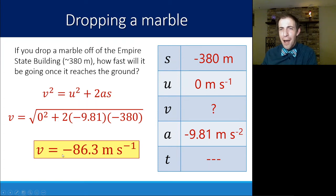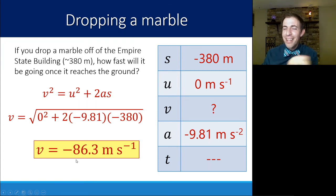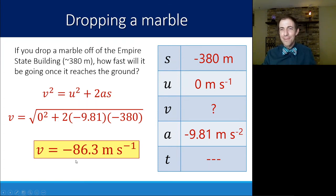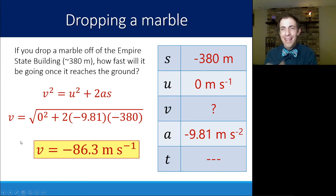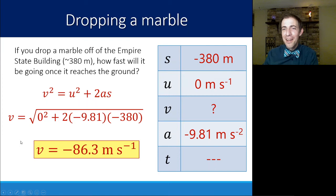For the record, a marble actually probably wouldn't get that fast in real life — that's now the speed range where air resistance would start to matter. But as an academic exercise, we're still going to assume air resistance doesn't exist and that we are in perfect freefall.